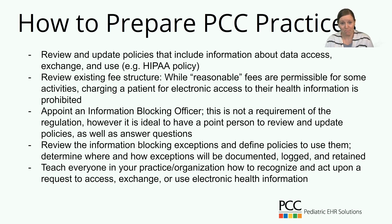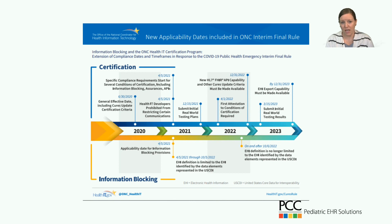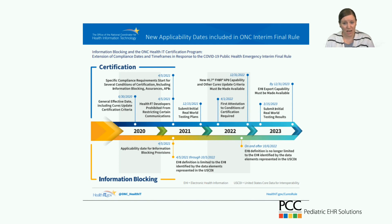This slide is from the ONC website — key regulatory dates that are for the most part aimed towards certified health IT vendors. The reason I'm showing it is because we have a key date of April 5th, 2021 for when information blocking in general goes into effect. The other takeaway is that the timeline stretches out into 2023, so it'll be a while before this fully ramps up and then normalizes and becomes part of our daily lives.